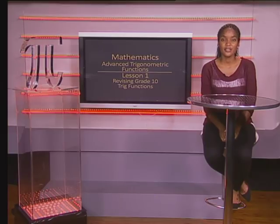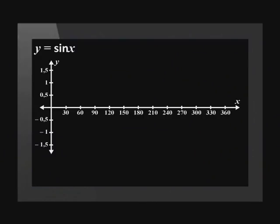Let's revise sine, cosine, and tangent graphs. The equation of the sine graph is y equals sine x. The coordinates of the parent function are (0,0), (90,1), (180,0), (270,-1), and (360,0).